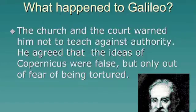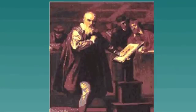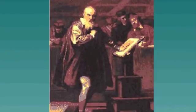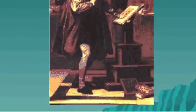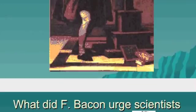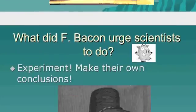Galileo's support of the heliocentric theory was challenging the authority of the church, so he basically went on trial — it was called the Galileo Affair. In 1633, he did take back these ideas out of fear of being killed, but he was placed under house arrest. He had first started producing these ideas in 1610 in his publication called the Starry Messenger, but it took a few decades for him to really go to trial.